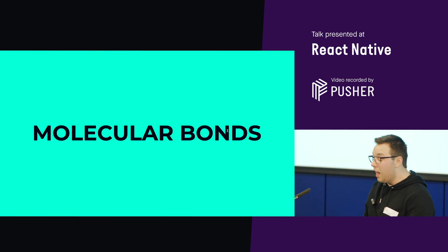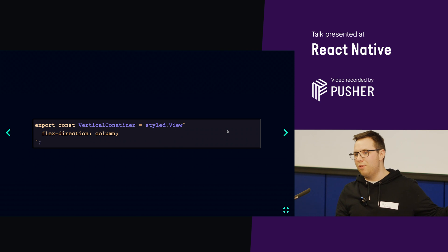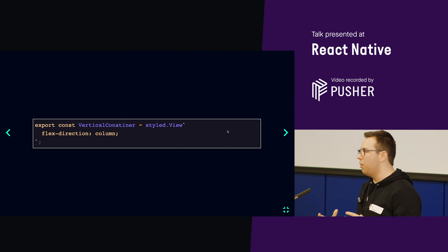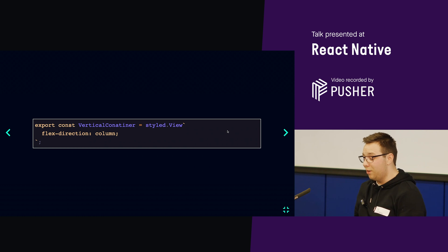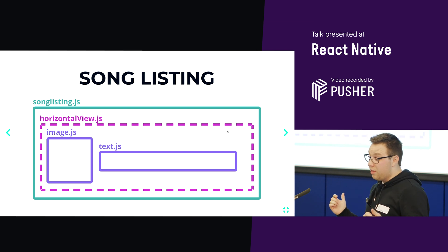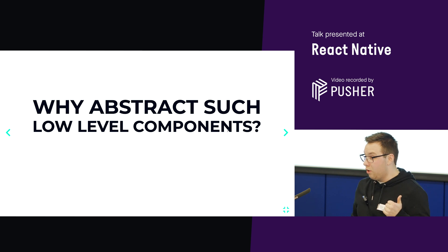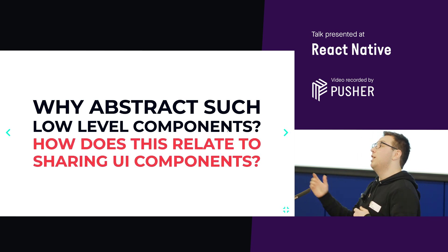I want to talk about molecular bonds. In the physics world, a molecular bond holds atoms together and keeps their structure. In my head, this is how I envision our view elements — essentially defining the structure of our components and keeping things looking as we expect them, in the right order. So here, a simple view element with a nice column direction. I can then go and use that across the entirety of the structure. If we look at a song listing with a horizontal view, we can make sure it's always going to be horizontal wherever that's used.